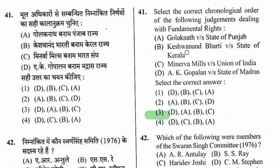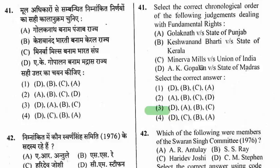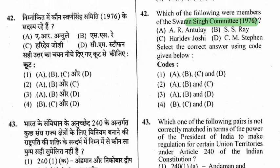Question 42: Which of the following were members of the Swaran Singh Committee 1976? Options are A.R. Antulay, S.S. Ray, Haridev Joshi, and C.M. Stephen. The right option is option 3 — A, B, and D: A.R. Antulay, S.S. Ray, and C.M. Stephen.